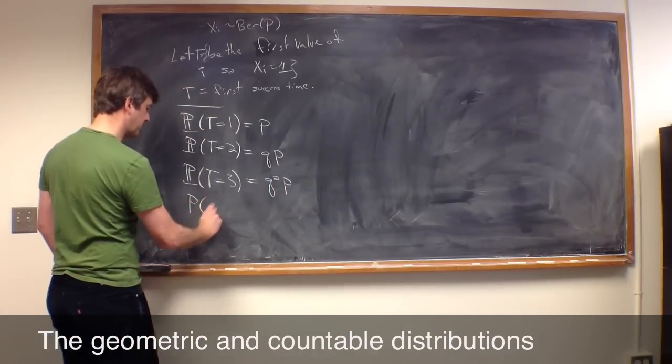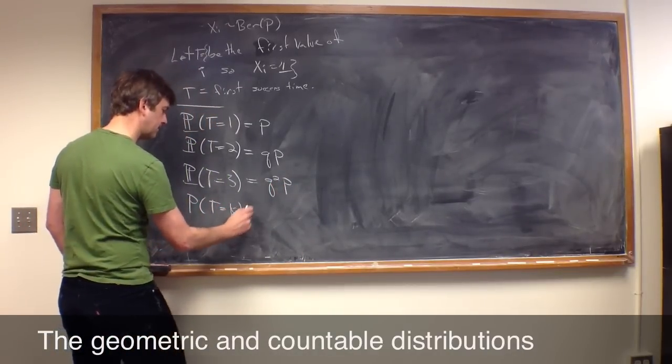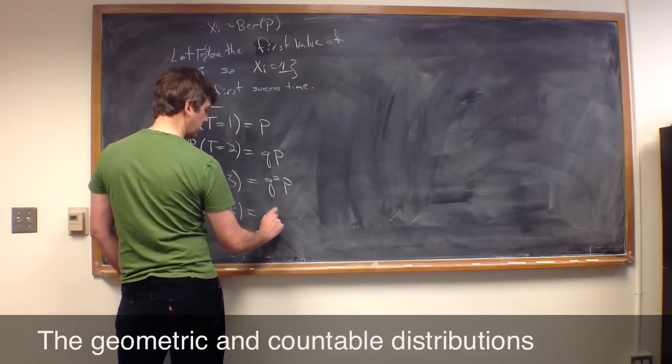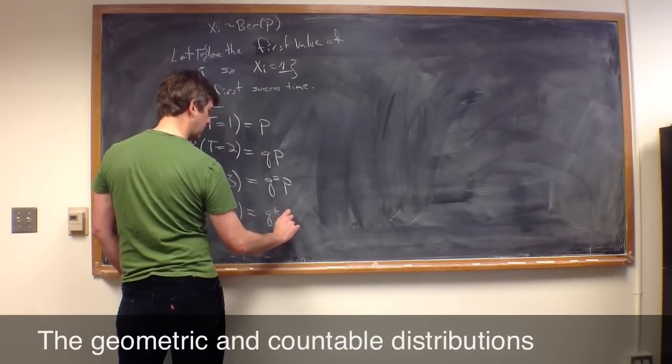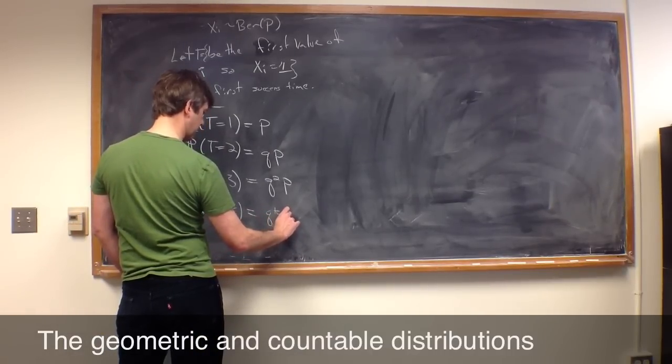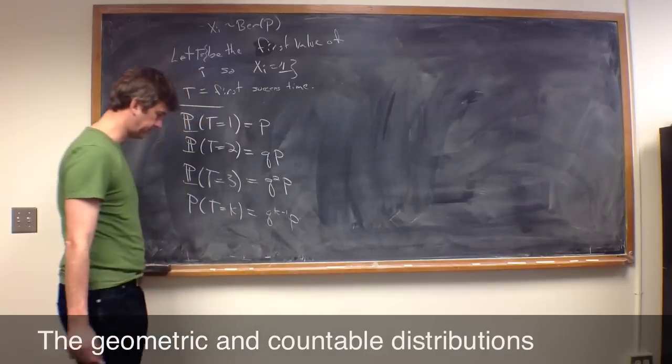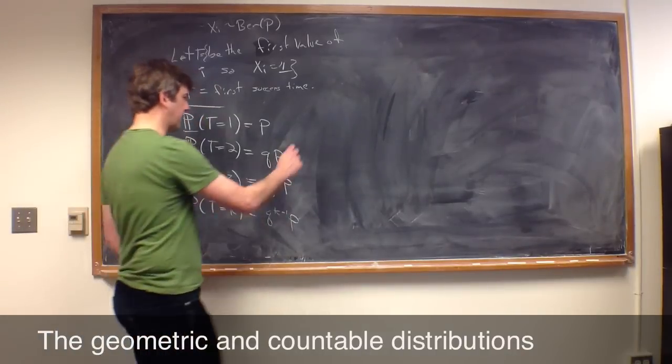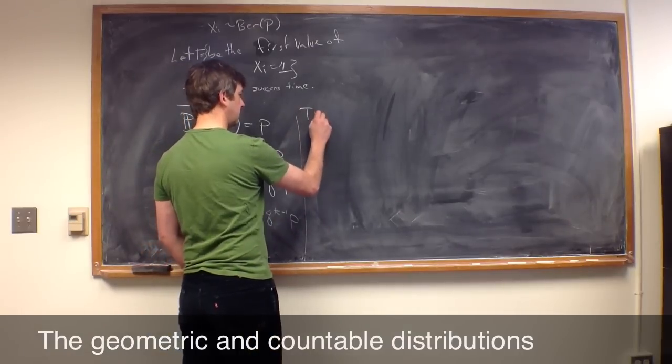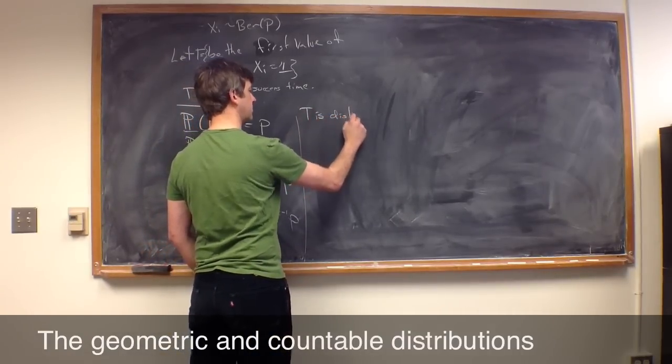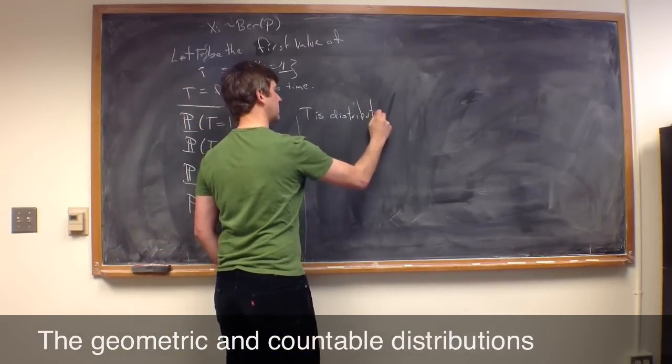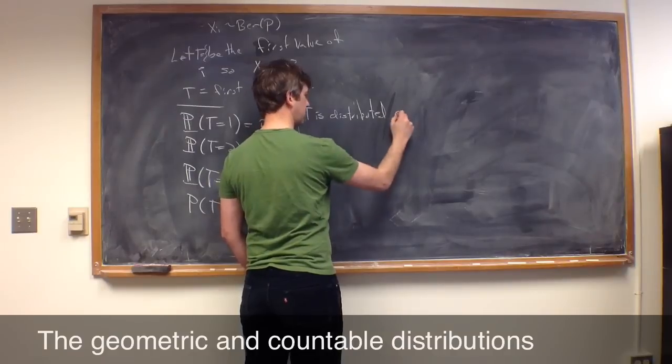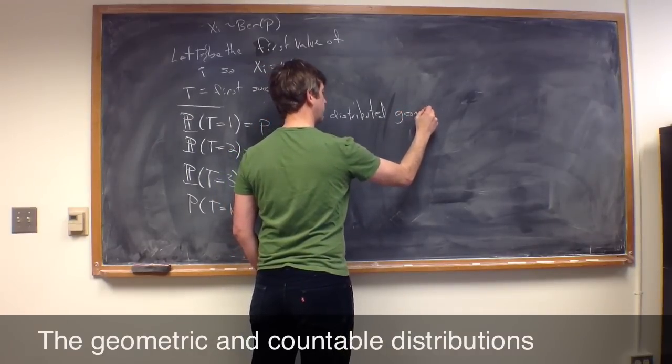And in general, the probability that t equals k is equal to q to the k minus 1 times p. And this random variable t is distributed geometric with parameter p.